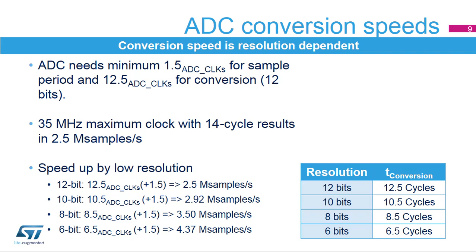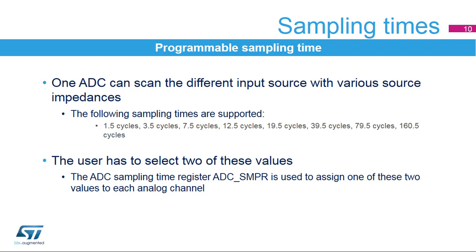The ADC needs a minimum of 1.5 clock cycles for sampling and 12.5 clock cycles for conversion in 12-bit mode. With a 35 MHz ADC clock it can achieve 2.5 mega samples per second. For higher sampling speed, it is possible to reduce the resolution down to 10, 8, or 6 bits. The sampling times listed in ADC clock cycles are available; longer sample times ensure that signals with higher impedance are correctly converted. At any given time, only a pair of possible sampling times is active, and for each analog channel the user is free to select one of these two values.